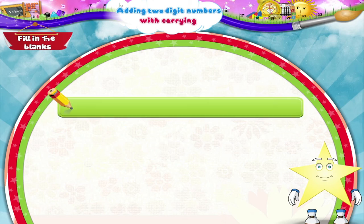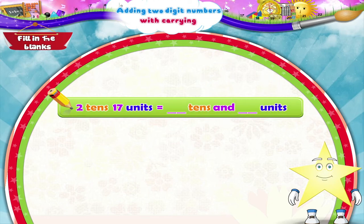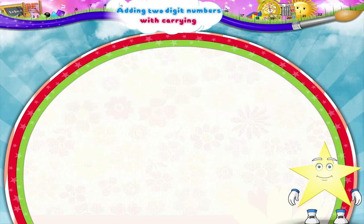Two tens seventeen units is equal to how many tens and how many units? Can you fill in the blank Starry? Yes, two tens seventeen units equals three tens seven units.